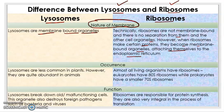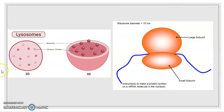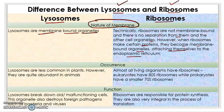Technically, ribosomes are not membrane-bound and there is no separation between them and the other cell organelles. But during the process of protein synthesis, certain ribosomes become membrane-bound organelles attaching themselves to the endoplasmic reticulum. Looking at the picture of a lysosome, you can see it is covered by a membrane. In cross-section, the outer layer is the membrane of the lysosome. In case of ribosomes, you cannot see a membrane unless they are involved in protein synthesis.